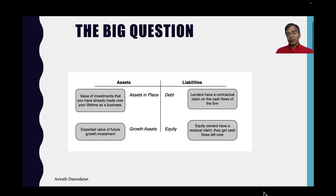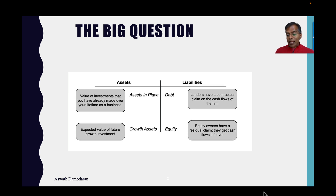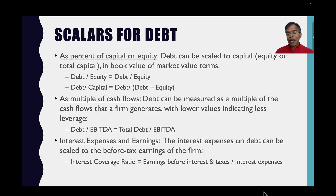The other difference is that in return for getting residual claims, equity investors usually pick the managers who run the company, or run it themselves. Lenders are outsiders — they have contractual protection in the form of covenants, but they can't do much more. With that background, let's talk about measuring debt at companies.